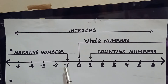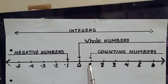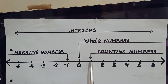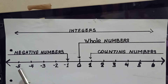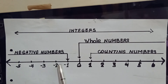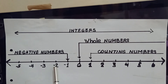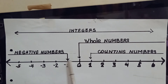Therefore, we can say that any positive number is always greater than any negative number. Comparing negative 5 and 1 — which is bigger? Because 1 is found to the right of negative 5, 1 is very much bigger than negative 5. Comparing negative 2 and negative 3 — which is bigger? Because negative 2 is found to the right of negative 3, negative 2 is greater than negative 3.